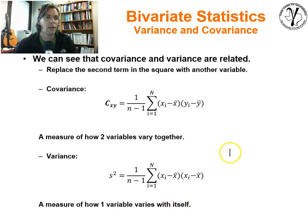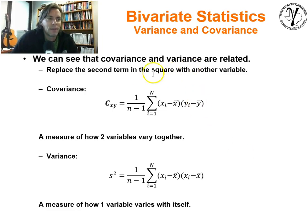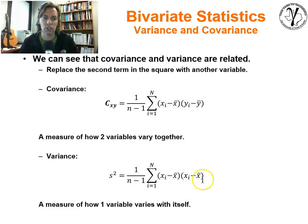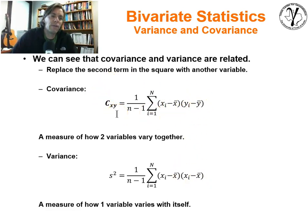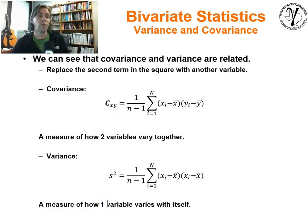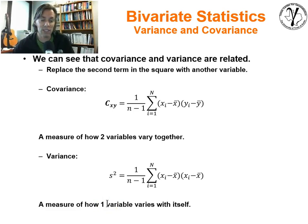Comparing the covariance and variance: if you take the sample variance equation and replace one of the centered-x terms with a centered-y term, you get the covariance. So the variance measures how one variable varies with itself, and the covariance measures how two variables vary together. I find that comparison really helps in understanding the covariance and relating it to variance.